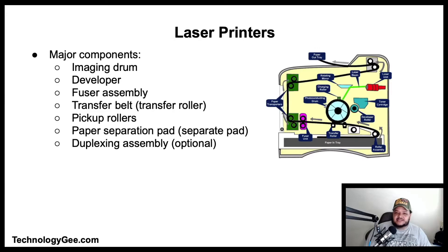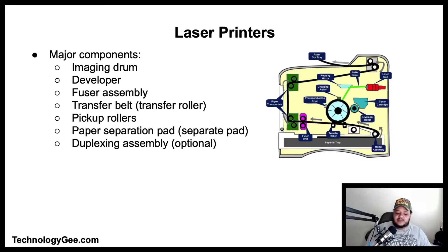A laser printer's major components are: the imaging drum, which applies the page image to the transfer belt or roller and is frequently combined with the toner supply in the toner cartridge; the developer, which pulls toner from the toner supply and sends it to the imaging drum; the fuser assembly, which fuses the page image to the paper; the transfer belt or transfer roller, which transfers the page image from the drum to the page; the pickup rollers, which pick up paper; the paper separation pad, which enables pickup rollers to pick up only one sheet at a time; and the optional duplexing assembly, which switches paper from front to back so the printer can print on both sides.